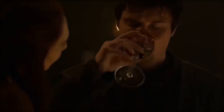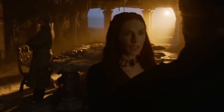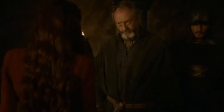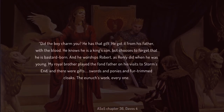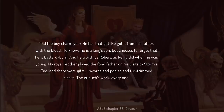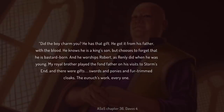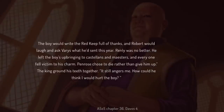That whole Melisandre taking King's Blood moment happened to Edric in the books, when Stannis, Melisandre, and Davos consider how to use his own nephew for their cause. Davos fears what Melisandre will do with him after seeing all the sacrifices being made to her Lord of Light. In the third book, Stannis says: 'Did the boy charm you? He has that gift. He got it from his father, with the blood. He knows he is a king's son, but chooses to forget that he is bastard-born, and he worships Robert as Renly did when he was young. My royal brother played the fond father on his visits to Storm's End, and there were gifts — swords and ponies and fine cloaks. The eunuch worked every one. The boy would write the Red Keep full of thanks, and Robert would laugh and ask Varys what he'd sent this year.'